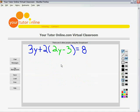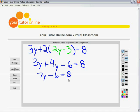Now that we only have one variable, we can solve for y. 3y and distribute the 2 plus 4y minus 6 is equal to 8. We'll combine like terms and get 7y minus 6 is equal to 8. Add 6 to both sides. 7y is equal to 14. And divide both sides by 7. We find out that y is equal to 2.